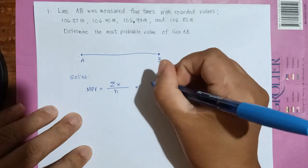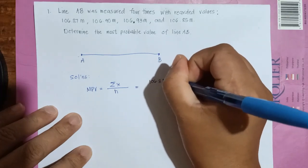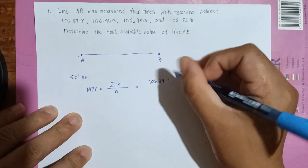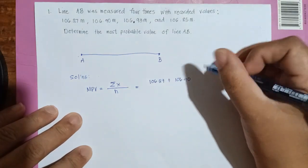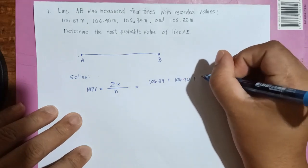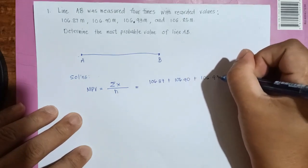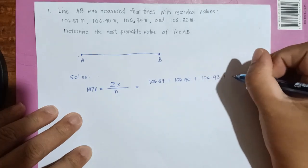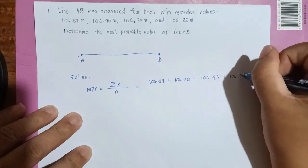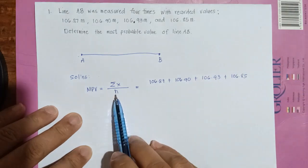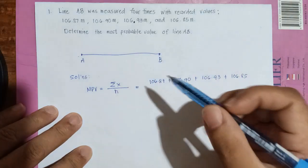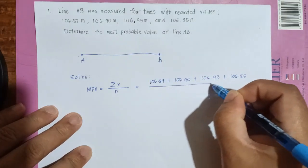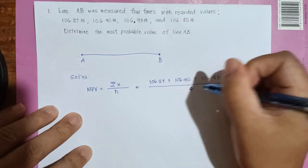So what are the measurements? Of course, you have measurement one, two, three, and four. So just sum it up: 106.87 plus 106.90 plus 106.93 and 106.85. In this case, N is the number of trials, so we have one, two, three, four, so divided by four.